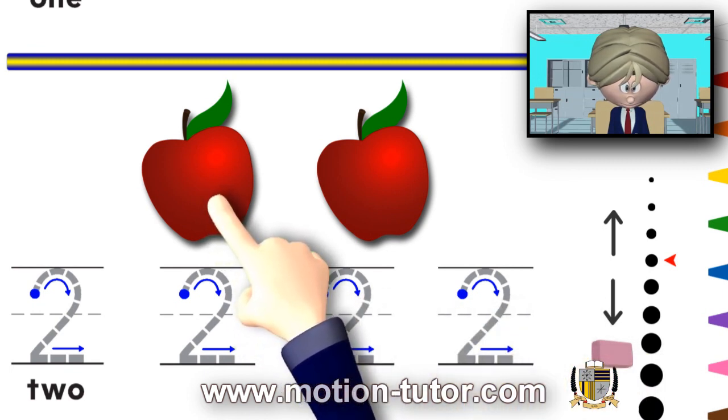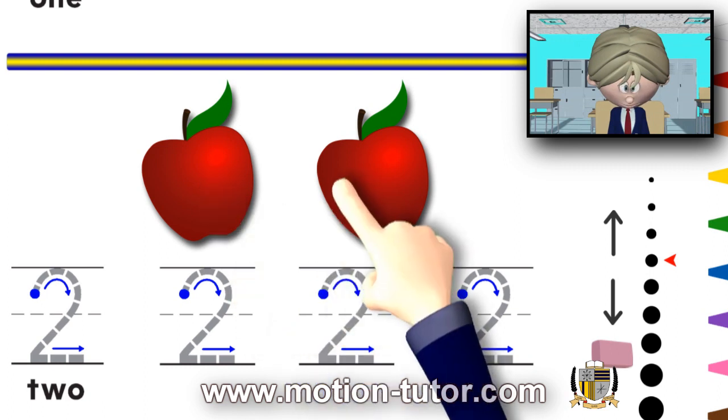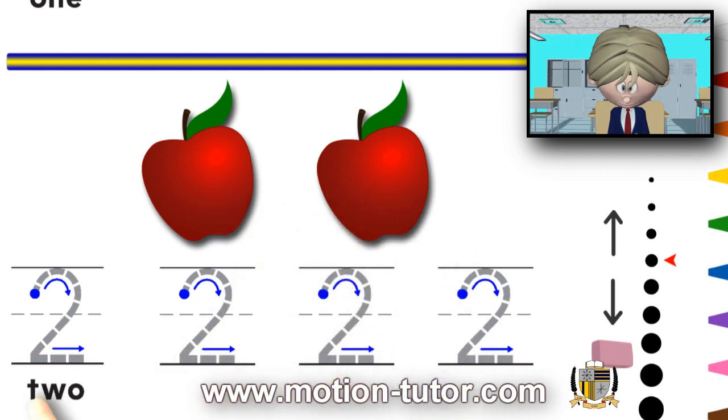2. We have 2 apples. 1, 2. And this is how 2 is spelled. T-W-O. And now, let's write the number 2.